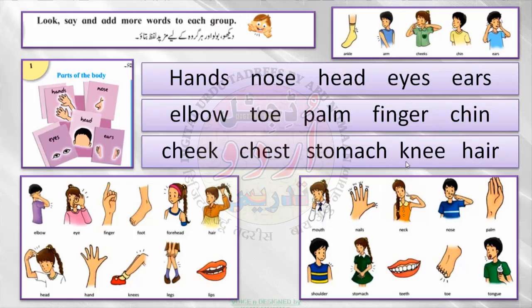Okay children, here in 'knee' you can see the letter K is written but its sound is not taken — K is silent. The spelling is written but not pronounced; we call it silent. In 'knee', K is written but it remains silent. So this was the first group: parts of the body. We will go to the next group.